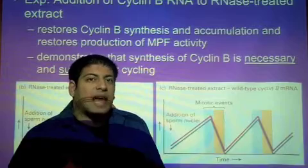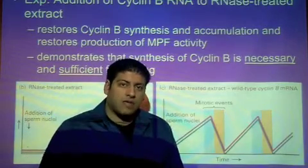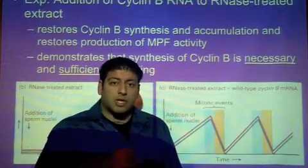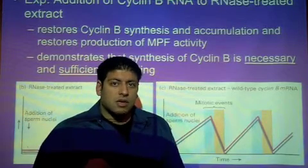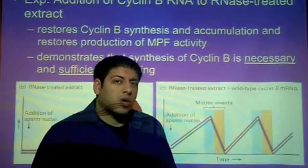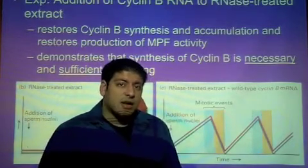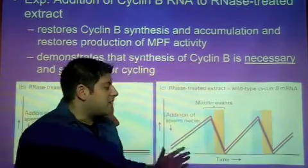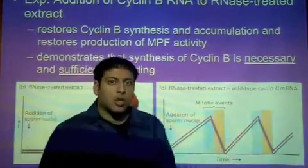By adding messenger RNA for cyclin B into an egg cell that has been treated with RNase and restoring the cyclin B activity, we now show that cyclin B is both necessary and sufficient for MPF activity and mitosis to occur.